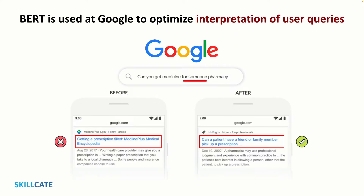Talking about its applications, BERT helps Google better surface English results for nearly all searches since November of 2020. Here's an example of how BERT helps Google better understand specific searches. Pre-BERT, Google surfaced information about getting a prescription filled. Post-BERT, Google understands that 'for someone' relates to picking up a prescription for someone else, and the search results now help to answer that.